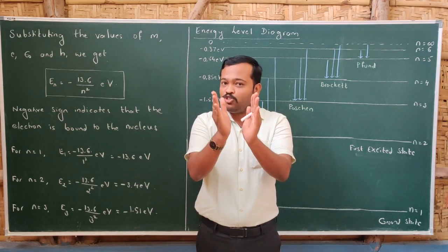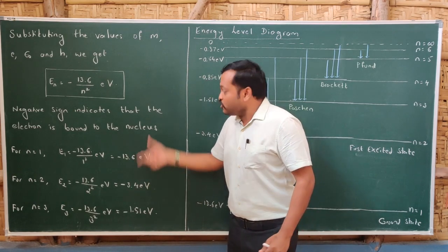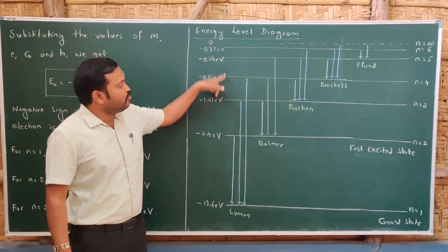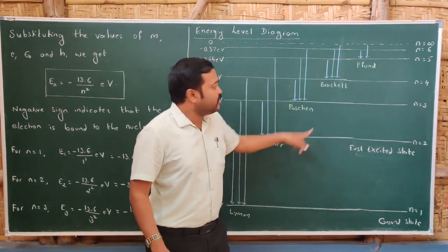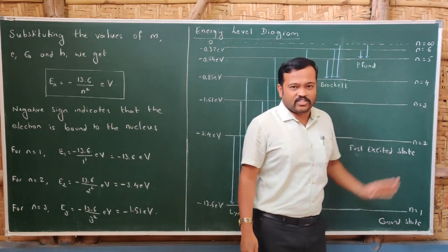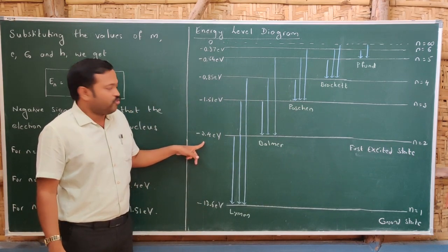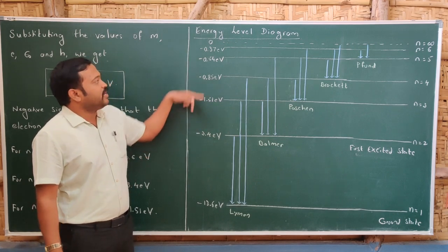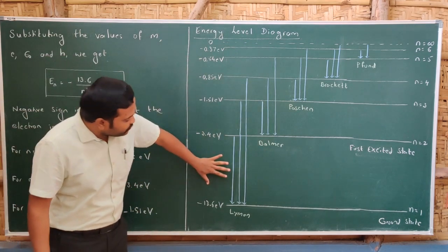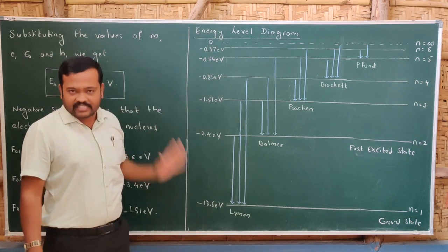Observe that the difference in energy between the first and second levels is greater than between the second and third. This can be represented in an energy level diagram. There are infinite energy levels: n = 1 (first) at -13.6 eV, n = 2 at -3.4 eV, n = 3 at -1.51 eV, and so on. As we go to higher energy levels, the difference between consecutive levels decreases.